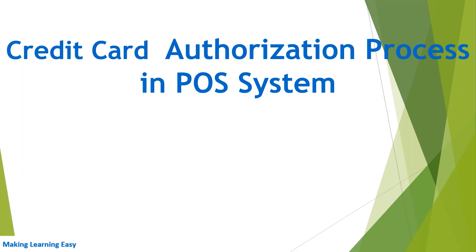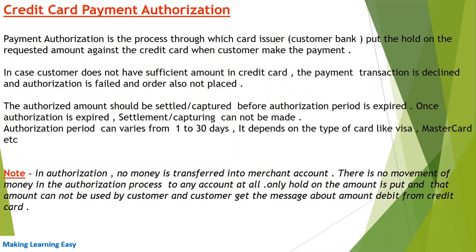Hello everyone, welcome to the session. In this session we are going to discuss the credit card authorization process in a point of sale system. Last time we had a discussion on how payment authorization works in an e-commerce website. First, what is credit card authorization? Payment authorization is the process through which the card issuer or customer bank puts a hold on the requested amount against the credit card when the customer makes a payment.